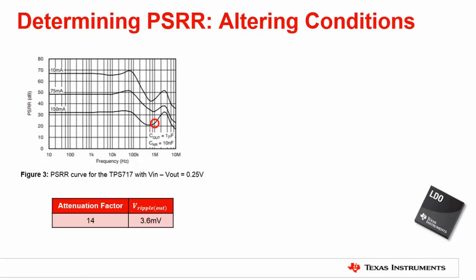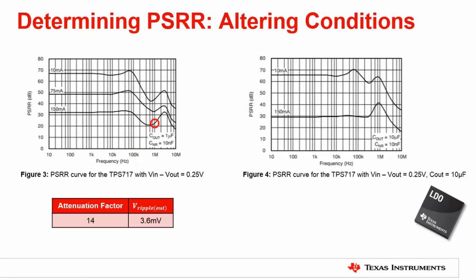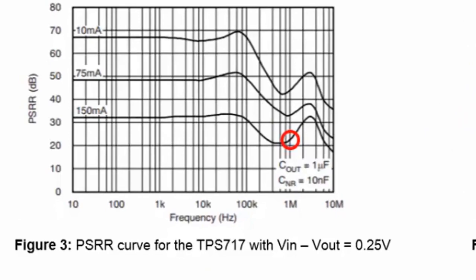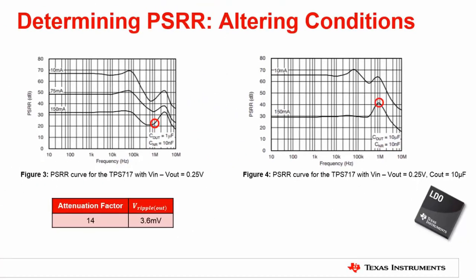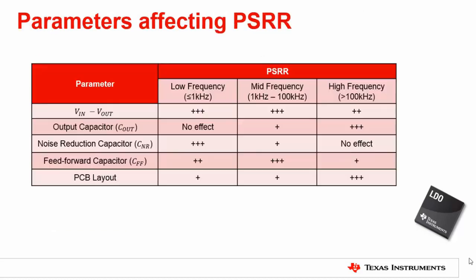Changing the output capacitor will also have implications, as shown in figure 4. By increasing the output capacitor from 1 microfarad to 10 microfarad, the PSRR at 1 megahertz increases to 42 decibels, despite the Vin-to-Vout delta remaining at 250 millivolts. When we compare the two plots, you can see that the high-frequency hump in the curve has shifted to the left. This is due to the impedance characteristics of the output capacitors. By sizing the output capacitor appropriately, you can tune the attenuation to coincide with a particular switching noise frequency.